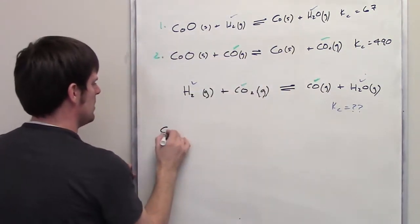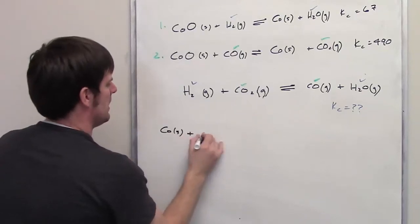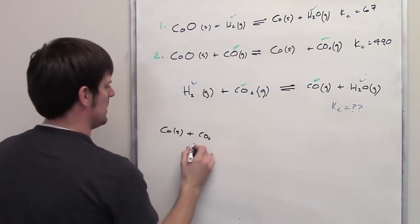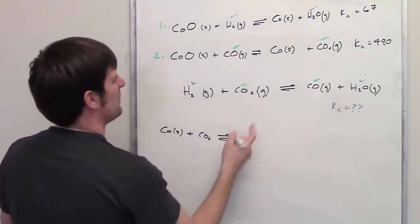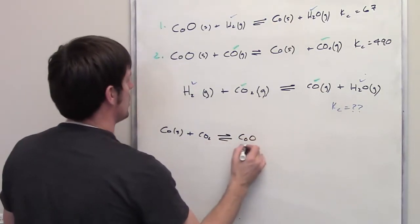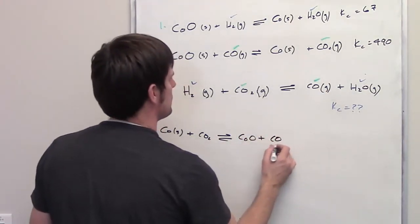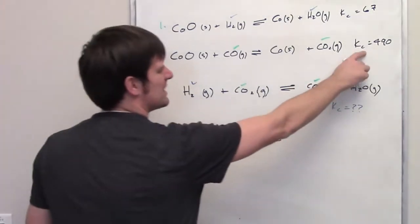I'm going to take equation 2 and I write down cobalt solid added to carbon dioxide. I'm going to leave off the gas to save myself from... It gives me cobalt oxide plus carbon monoxide.